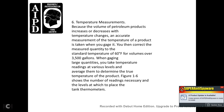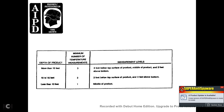50. Temperature measures. Because the volume of petroleum products increases and decreases with temperature change, an accurate temperature reading of the product is taken when you gauge it. You can then correct the measured quantity to the standard temperature of 60 degrees Fahrenheit. For volumes over 3,500 gallons, take temperature readings at various levels and average them to determine the true temperature of the product.